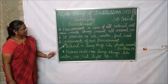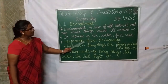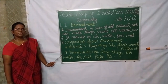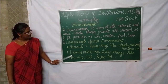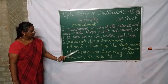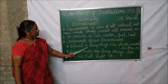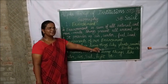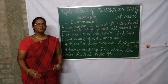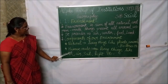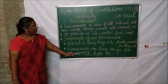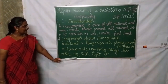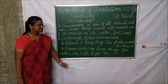Next we have discussed about components of our environment. There are two components: natural and human-made. Natural includes living things like plants, animals, bacteria, fungus, etc. Human-made includes non-living things like water, air, soil, light, etc.